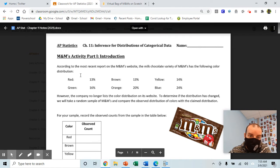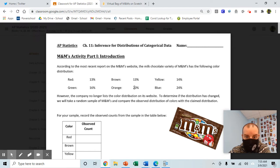What we have here is what the M&M website reports to be true about the distribution of the colors of M&Ms: 13% red, 13% brown, 14% yellow, 16% green, 20% orange, and 24% blue.